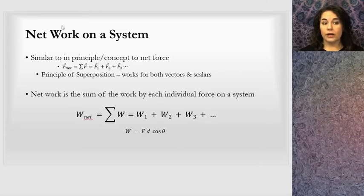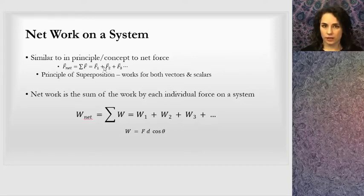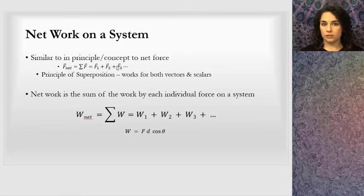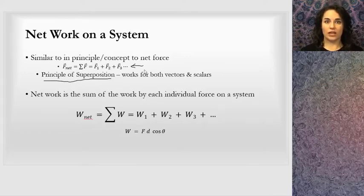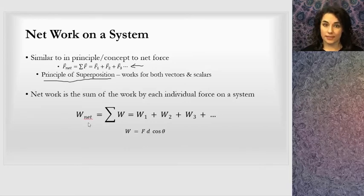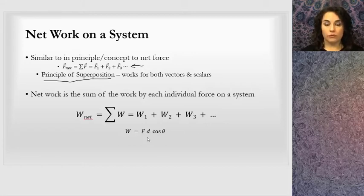When we look at the net work on a system, we have multiple forces going on — you saw that in the Carrie example. How we deal with this is similar to how we dealt with net force: we just add up all the individual works. This is formally called the principle of superposition — it may be a vocabulary term you want to hold onto. We just add all the works together. This works for scalars, and work is a scalar. So the work of one force plus the work of another, and so on, gives us the net work on the system. We can find the work of each force using Fd cosine theta.